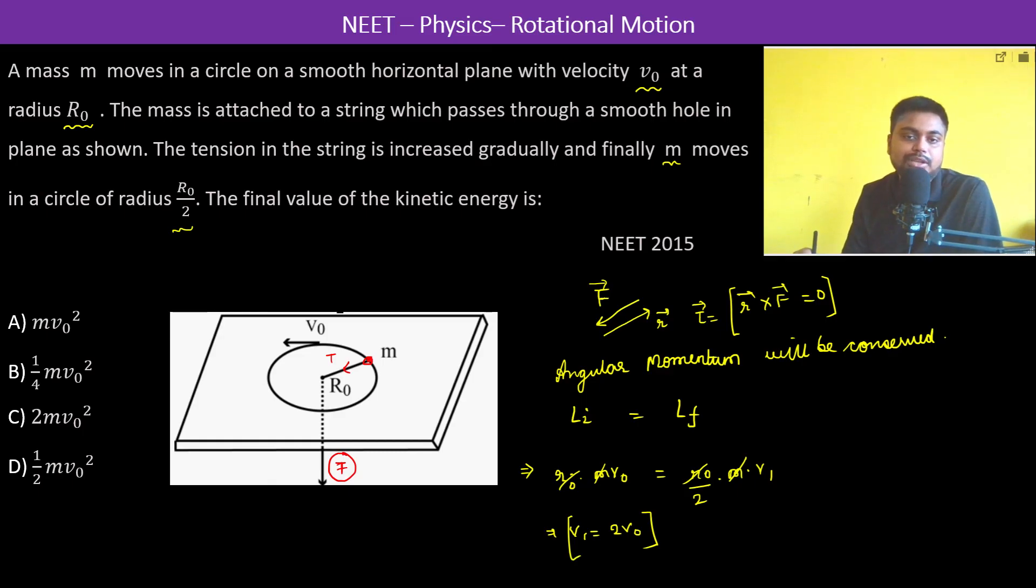Now, the final value of the kinetic energy is going to be half MV square, which is equal to half into M into 4 V naught square, which is 2 M V naught square. Therefore the answer is going to be C. Thank you.